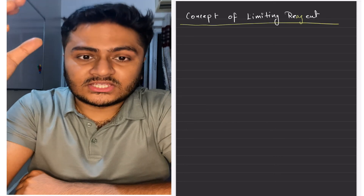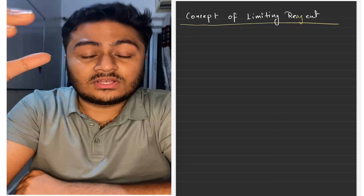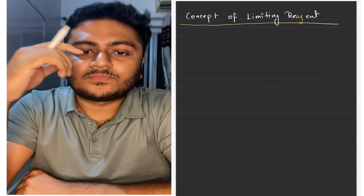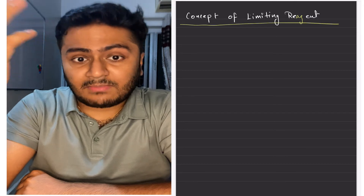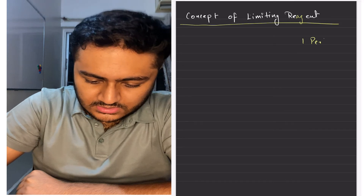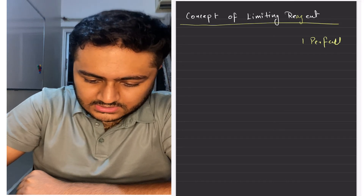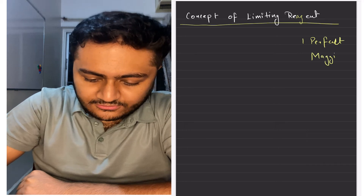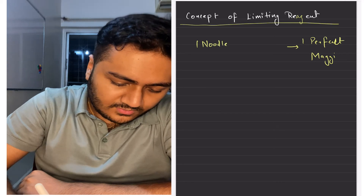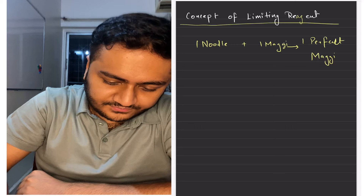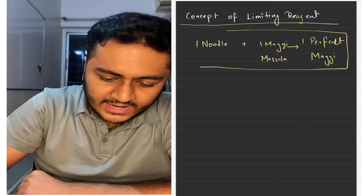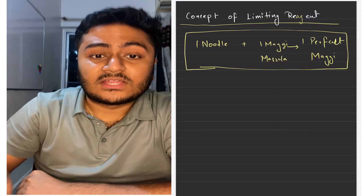Let's talk about the concept of limiting reagent. In this particular case we will consider more than one reactant. Let's take an example: you have been asked to make one perfect maggie. The way I define a perfect maggie is when you mix one noodle and one maggie masala. So this is how I have defined one perfect maggie.